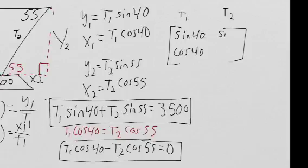And then we're adding sine 55, and then we're subtracting cosine 55.